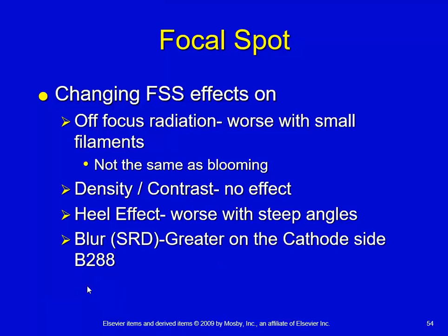On page 177, figure 10-28 shows how you get an increase in blur on the cathode end of the x-ray tube compared to the anode end. The intensity is greater at the cathode end — you get an increase in output there. But sharpness is greater on the anode end. In other words, you get an increase in penumbra — an increase in blur — along with an increase in intensity on the cathode end.